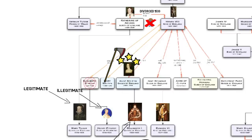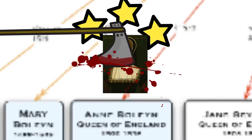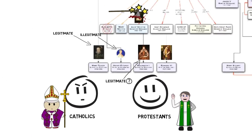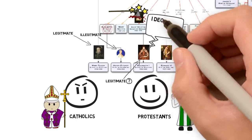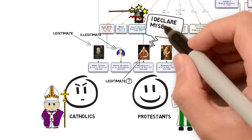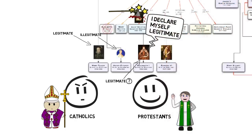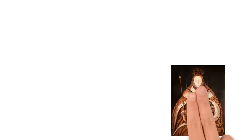To complicate things further, Henry becomes unhappy with Anne, and in 1536 he has her executed. Elizabeth is just two years old at this point. He declares his marriage to Anne null and void — as though it never happened — making Elizabeth illegitimate. So not only do Catholics consider her illegitimate, but now even her own father says she is. When she comes to the throne, all of this becomes a major issue.